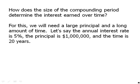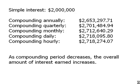On that scale, simple interest would give us $2,000,000 after 20 years. Compounding annually gives us $2,600,000, and then we see higher amounts for compounding quarterly, monthly, daily, and hourly. Notice that as we increase the compounding frequency, the total interest paid increases. As the compounding period decreases, the overall amount of interest earned increases. You always do better with more compounding.